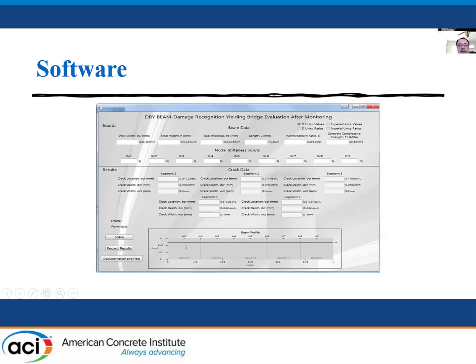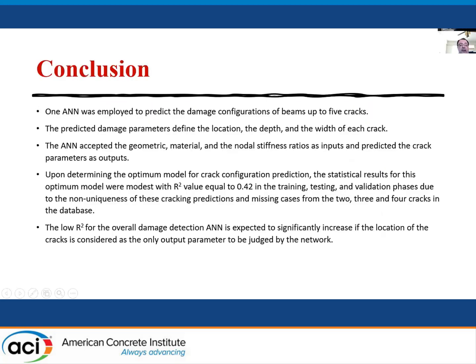In conclusion, one ANN artificial neural network was employed to predict the damage configuration of beams up to five cracks. The predicted damage parameters defined the location, the depth, and the width of each crack.